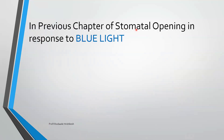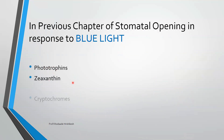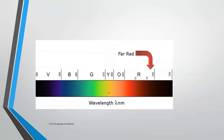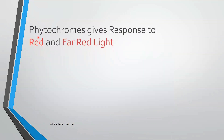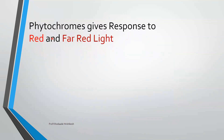In the previous chapter, we discussed the elements in plants that respond to blue light — phototropins, zeaxanthin, and cryptochrome. In this chapter, we need to understand who gives response to red and far red light. The element that responds to red and far red light is phytochrome. Phytochrome is also a pigment, just like cryptochrome, phototropin, and zeaxanthin.